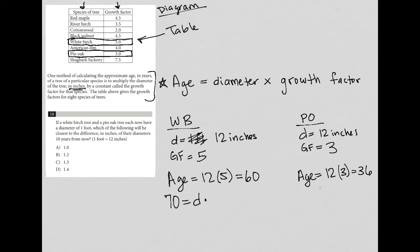I'll just instead of calling that D times five, I'll call it five D. So dividing both sides by five, I go to my calculator and I see that 70 divided by five is equal to 14. So that means the diameter is going to be equal to 14 inches 10 years from now for the white birch tree.